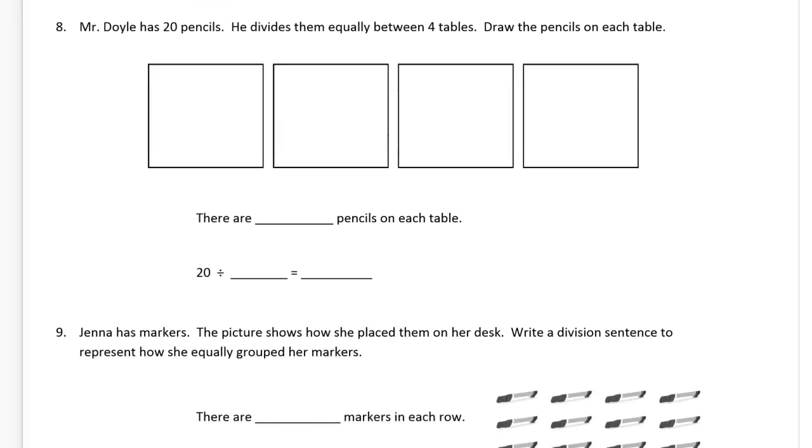And we'll go on to number eight. Mr. Doyle has 20 pencils. He divides them equally. That's important. Between four tables. So each big box here, that's a table, that's a table, that's a table, and that's a table. Draw the pencils on each table. Well, you have to draw the pencils on each table. So we've got 20 pencils. These can look just like tally marks.